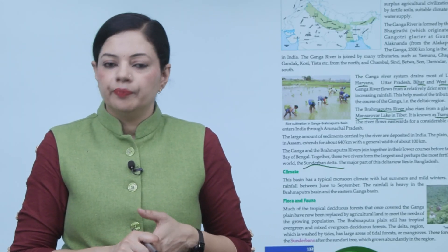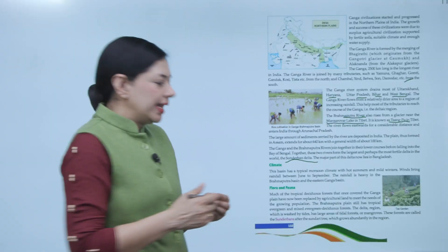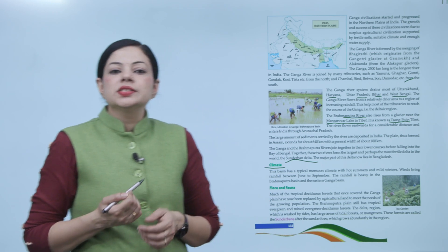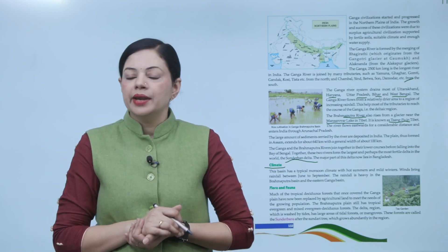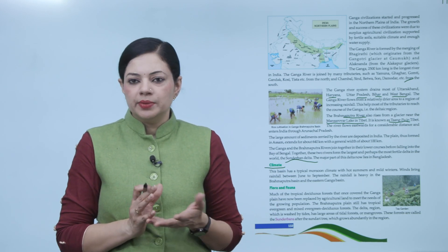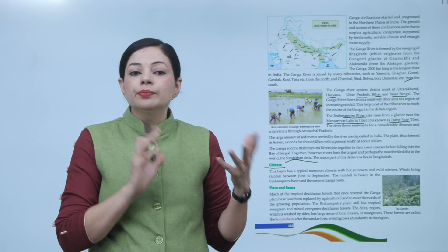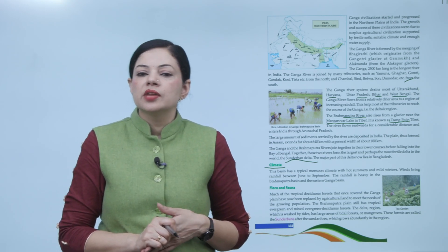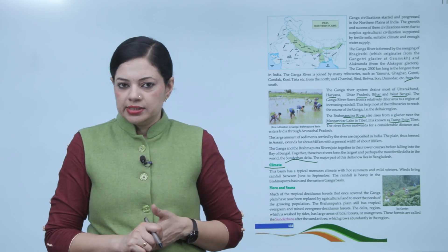The major part of this delta now lies in Bangladesh. This basin has a typical monsoon climate with hot summer and mild winter. Winds bring rainfall between June to September, giving it a monsoon type of climate. The rainfall is heavy in the Brahmaputra basin and eastern Ganga basin.